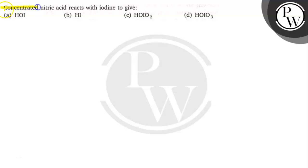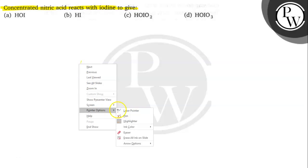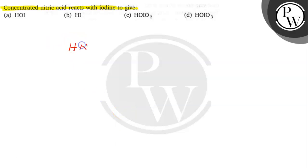Hello, let's see the question. The question says here concentrated nitric acid reacts with iodine to give... so when concentrated nitric acid, what will be its formula? Concentrated nitric acid, that is HNO3, HNO3 in the concentrated form.